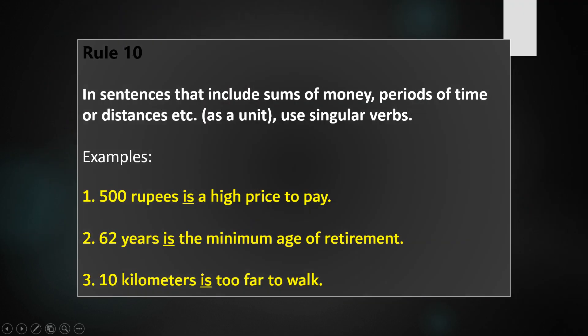Rule 10: In sentences that include sums of money, periods of time, or distances, use singular verbs. For example: Five hundred rupees is a high price to pay. Sixty-two years is the minimum age of retirement. Ten kilometers is too far to walk. Even if the denominations are plural, the verb remains singular.